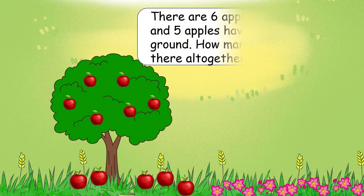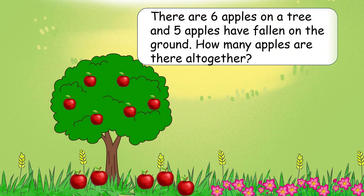There are 6 apples on a tree and 5 apples have fallen on the ground. How many apples are there altogether? Ek pair per 6 apples thay aur 5 apples neeche gir gaye. How many apples are there altogether? Your time starts now.